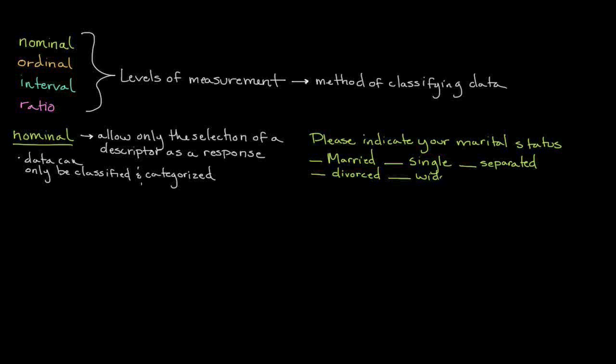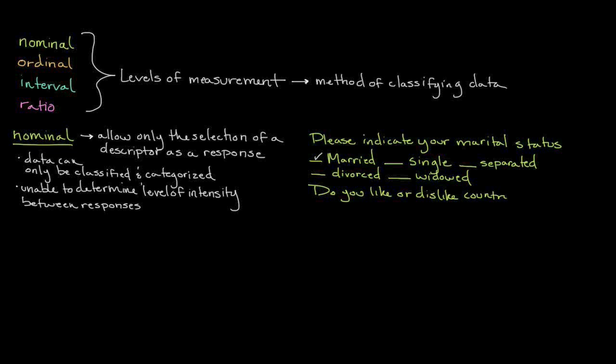Since these are qualitative variables, we know that we're fairly limited in terms of the types of tests that can be performed. For example, we can't average the results, so we can really only tally the number of responses into mutually exclusive categories and provide overall results. Another limitation of nominal scales is that we can't determine the level of intensity between responses. For example, a question asking respondents whether they like or dislike a certain type of music fails to establish the intensity to which respondents like or dislike a particular genre of music.